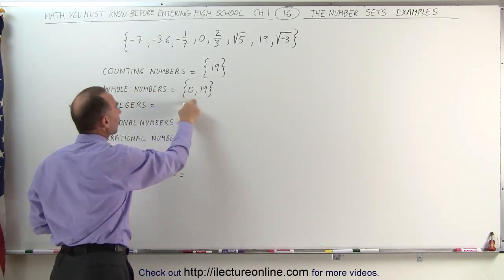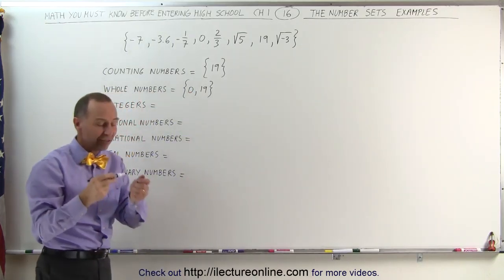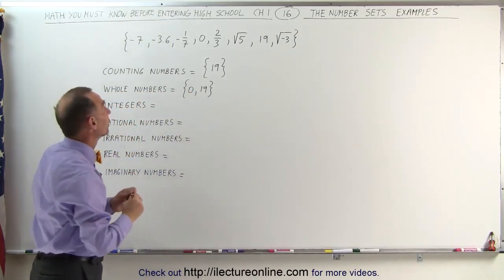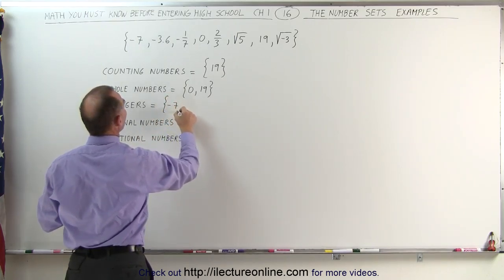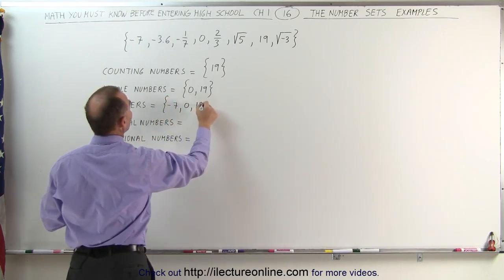Integers are all the whole numbers plus whole numbers with negative signs in front of them. And is there one here? Yes, there is. The number is negative 7, so the set of integers are the numbers negative 7, 0, and 19.